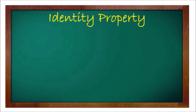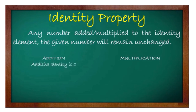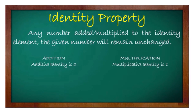The next property is the identity property of addition and multiplication. This property states that any number added or multiplied by the identity element remains unchanged. For addition, the additive identity is 0 — any number added to 0 equals itself. For multiplication, the multiplicative identity is 1 — any number multiplied by 1 equals itself.